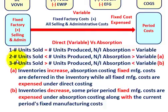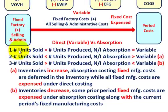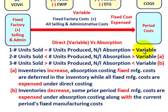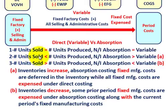Let's look at three scenarios comparing direct or variable costing versus absorption costing. In the first case, where units sold equals units produced, both methods should produce approximately the same net income.